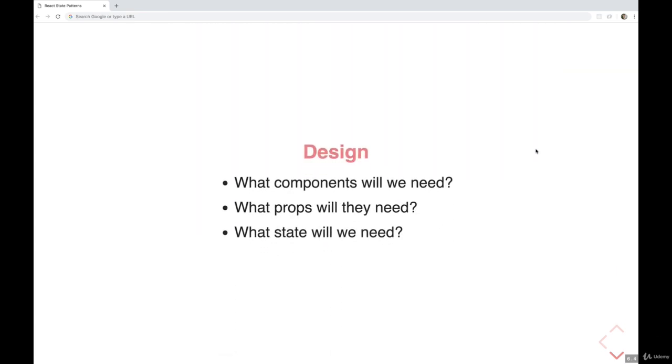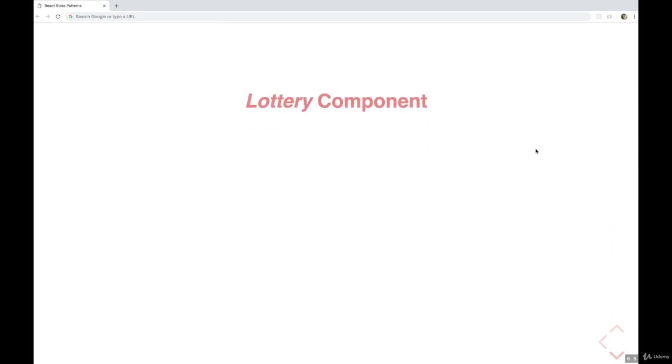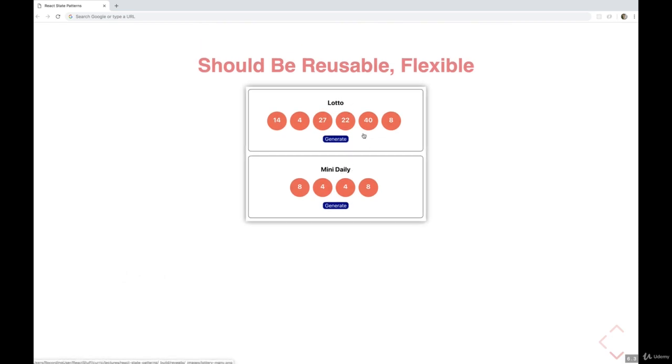So which components do we need? What props will they need? And what state will we need? Here's one version—the version that I'm going to say is best. The lottery component needs to have a couple of props. The title, so that we can alter what title is displayed up top. Lotto, mini daily.